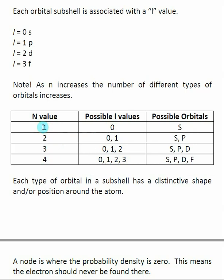When we are in the first energy level, there can only be one type of orbital: s. At the second n value, s or p orbitals are possible. At the third, s, p, or d. At the fourth, s, p, d, or f. As atoms get larger, their bonding becomes more complex because they have more types of orbitals involved, and these orbitals are directly related to the bonding atoms undergo when making molecules.